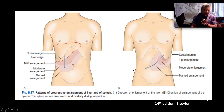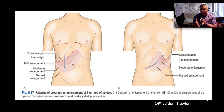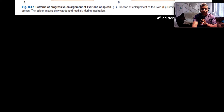This is just showing us the pattern of progressive enlargement of the liver and spleen. The liver enlarges inferiorly, but the spleen enlarges inferomedially.